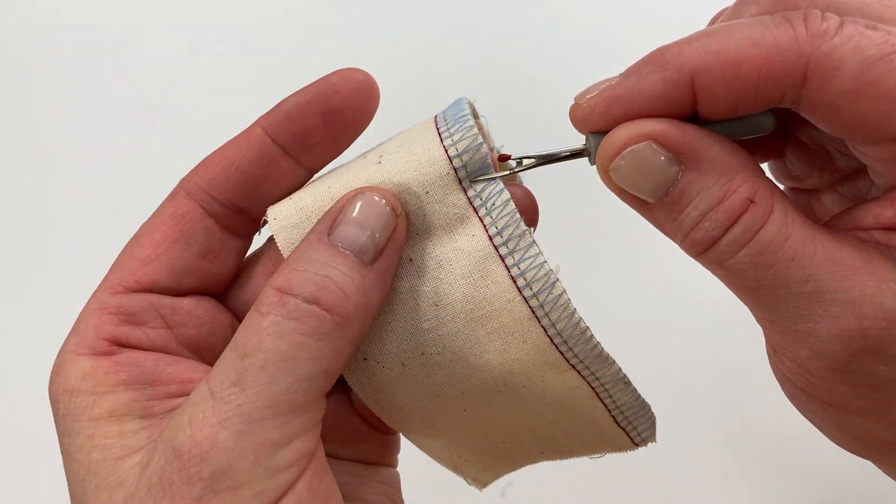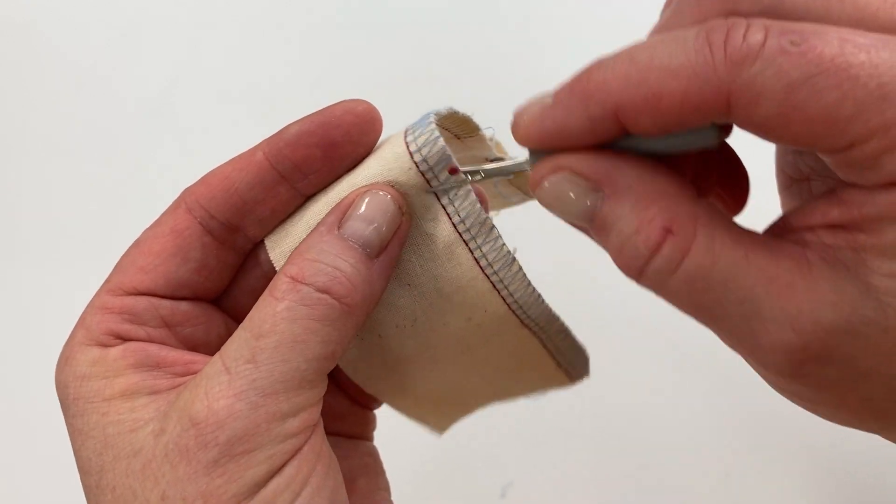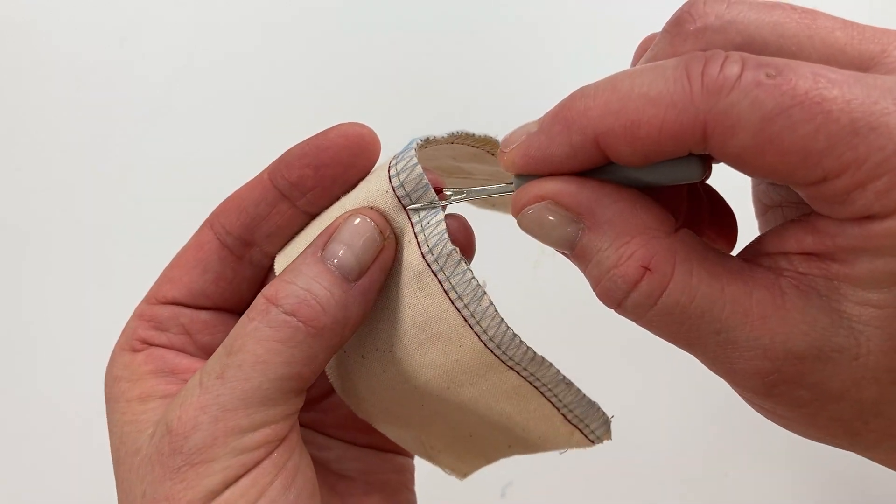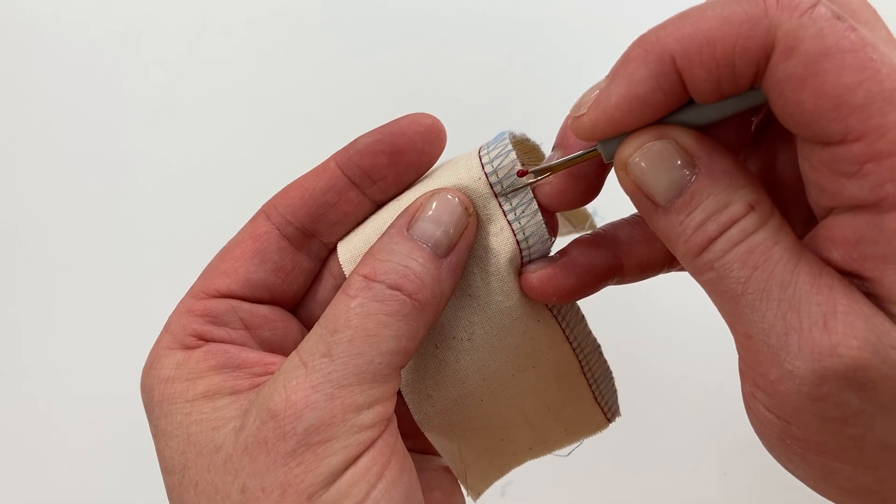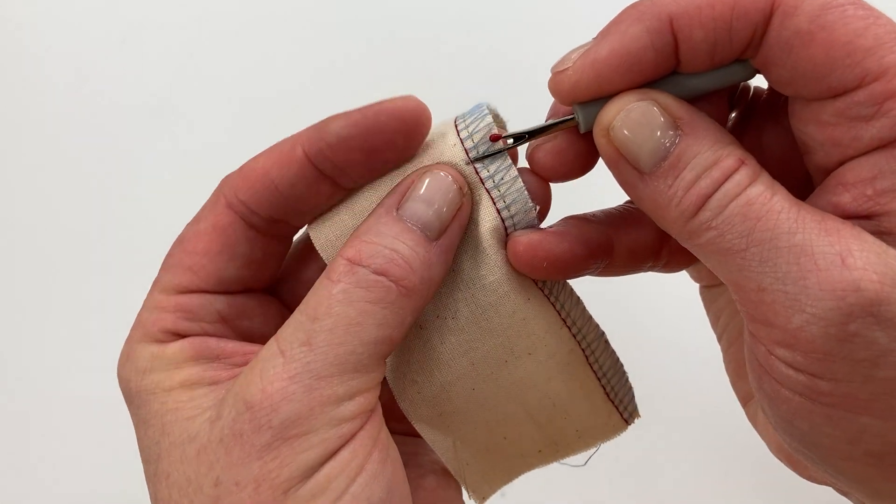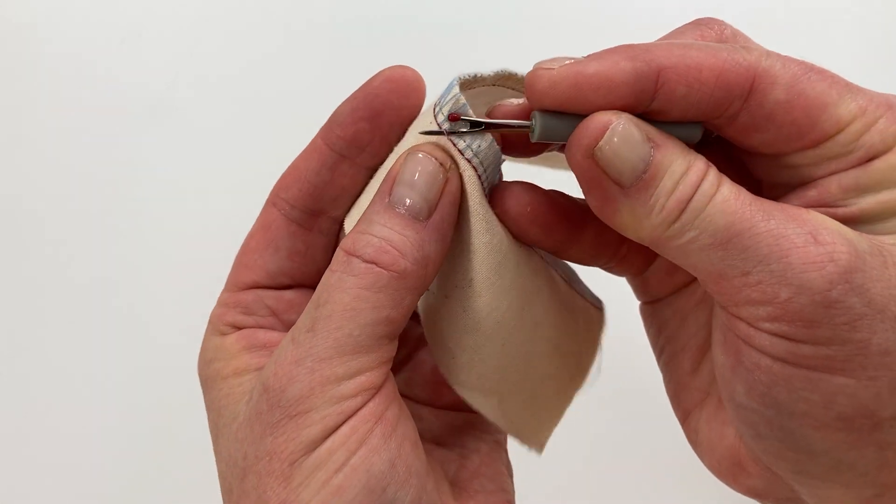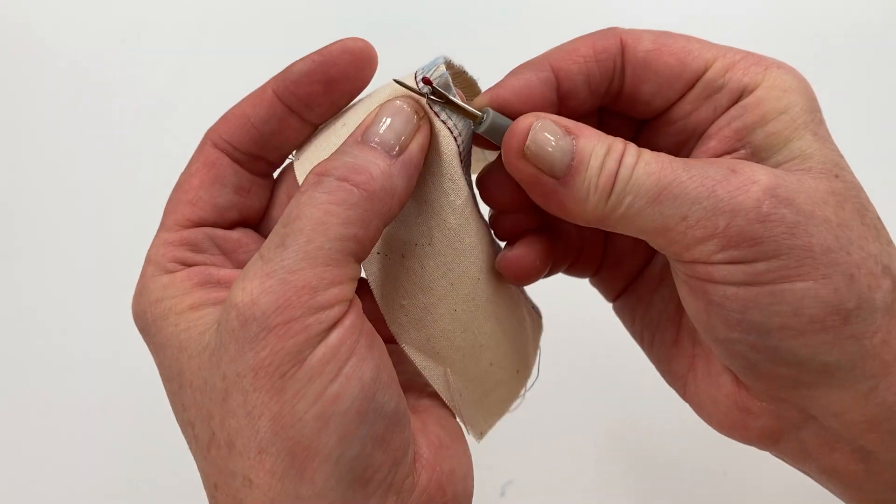So the red is really easy to see. I've sewn this in these dark colors so you can see. If you have the same color thread as your fabric it's a little bit more challenging but I'm just going to grab that needle thread and break it.